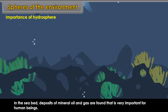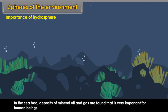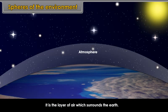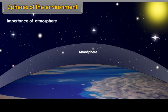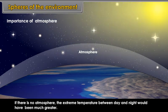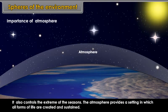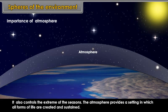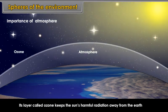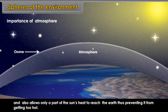Atmosphere: It is the layer of air which surrounds the earth. Importance of atmosphere: If there is no atmosphere, the extreme temperature between day and night would have been much greater. It also controls the extremes of the seasons. The atmosphere provides a setting in which all forms of life are created and sustained. Its layer called ozone keeps the sun's harmful radiation away from the earth and allows only a part of the sun's heat to reach the earth, thus preventing it from getting too hot.